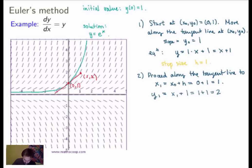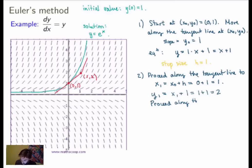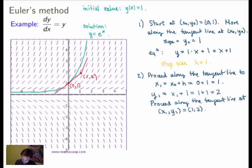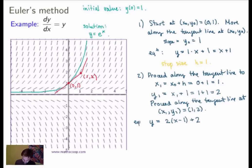Now the idea of Euler's method: we've moved along the tangent line to this new point, and now we change direction. We use the slope field and move along the slope field in the new direction corresponding to the new point (x₁, y₁) = (1, 2). At this new point the slope is given by the y-coordinate, so slope = 2. The new tangent line is y = 2(x − 1) + 2.